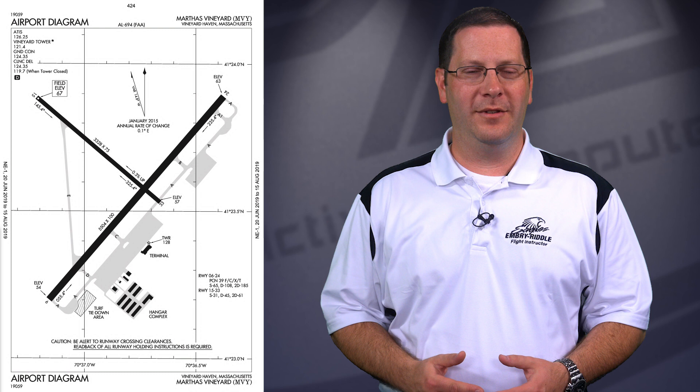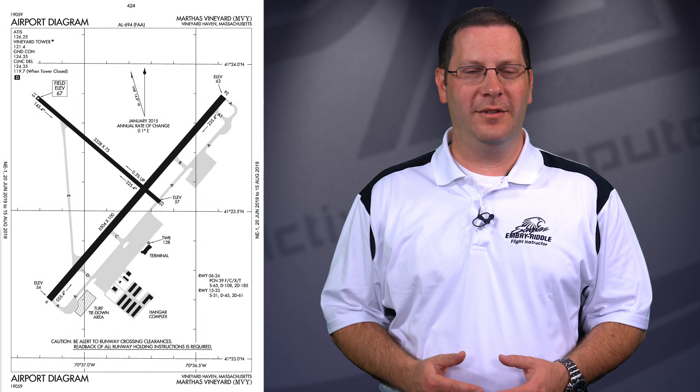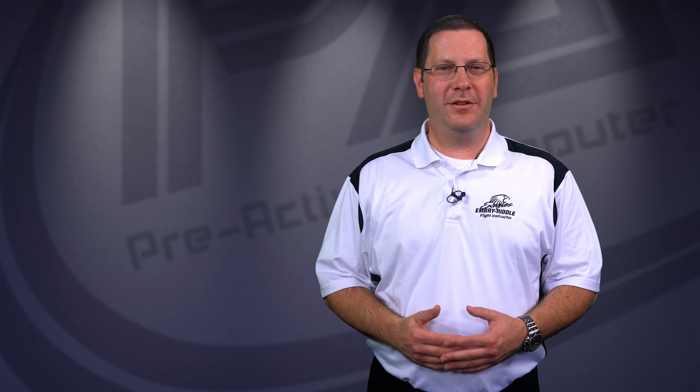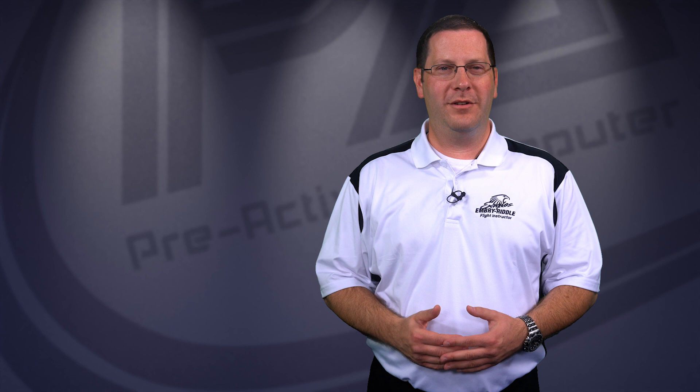Additionally, there are also takeoff, radar, and alternate minimum textual procedures. Let's discuss the main features of a typical instrument approach chart. For our example, we'll be using the ILS localizer for Runway 21 at Pocatello Regional Airport, located in Idaho. This approach offers a few unique qualities due to the mountainous terrain in the area.